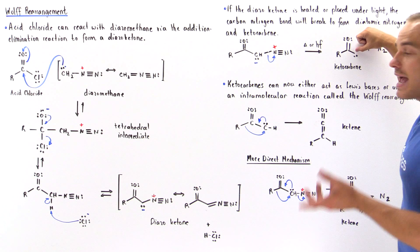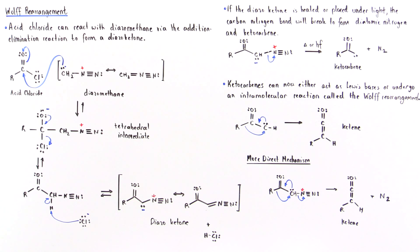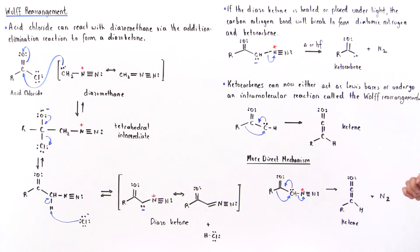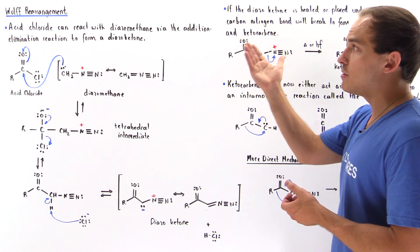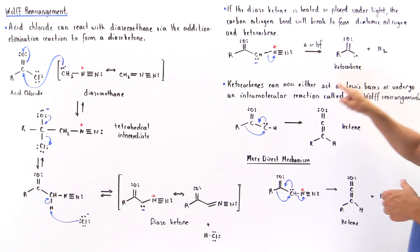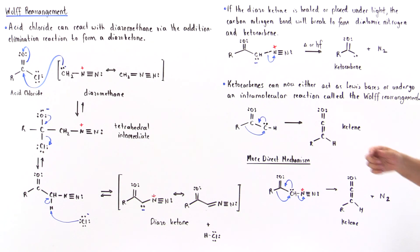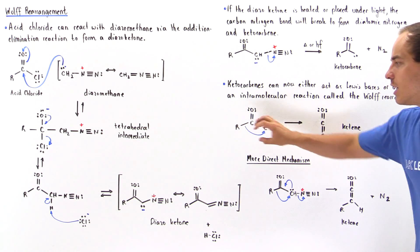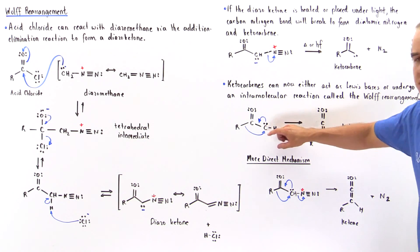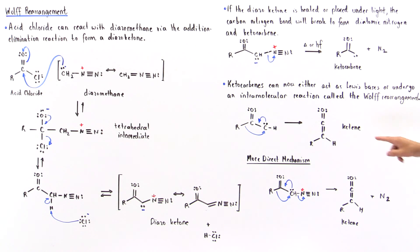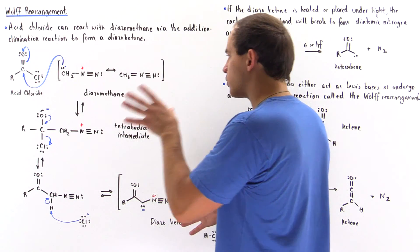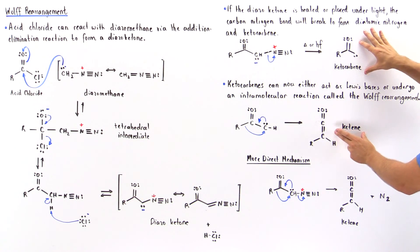Ketocarbenes generally act as Lewis bases, but another reaction can take place in which the ketocarbene undergoes an intramolecular reaction known as the Wolff Rearrangement. This is the less direct reaction mechanism: via a single concerted mechanism, these electrons form a pi bond between the carbon and carbon, the R group migrates along with its two electrons and forms a bond with this carbon, producing our ketene — with a double bond between carbon and oxygen and a double bond between the two carbons.